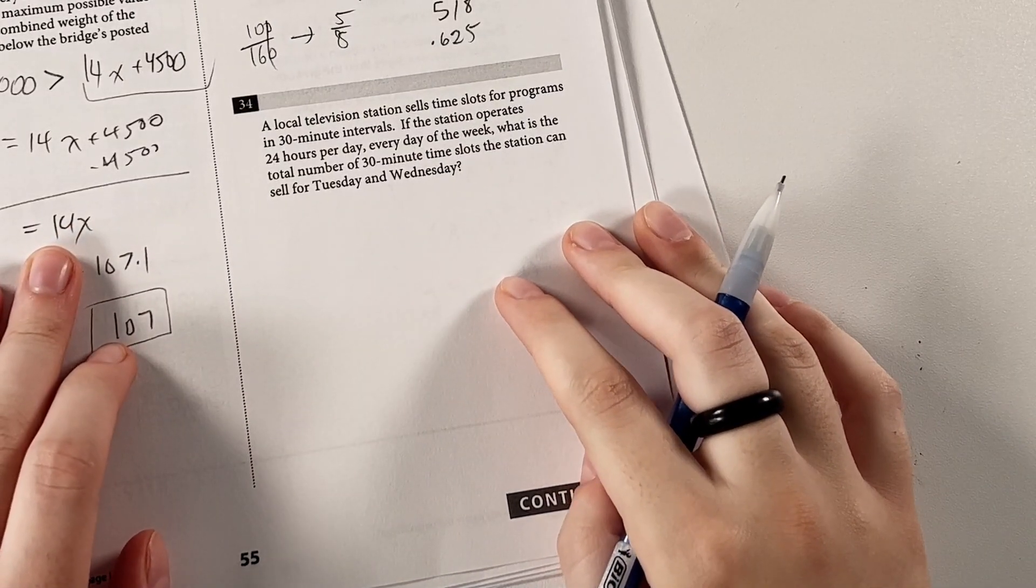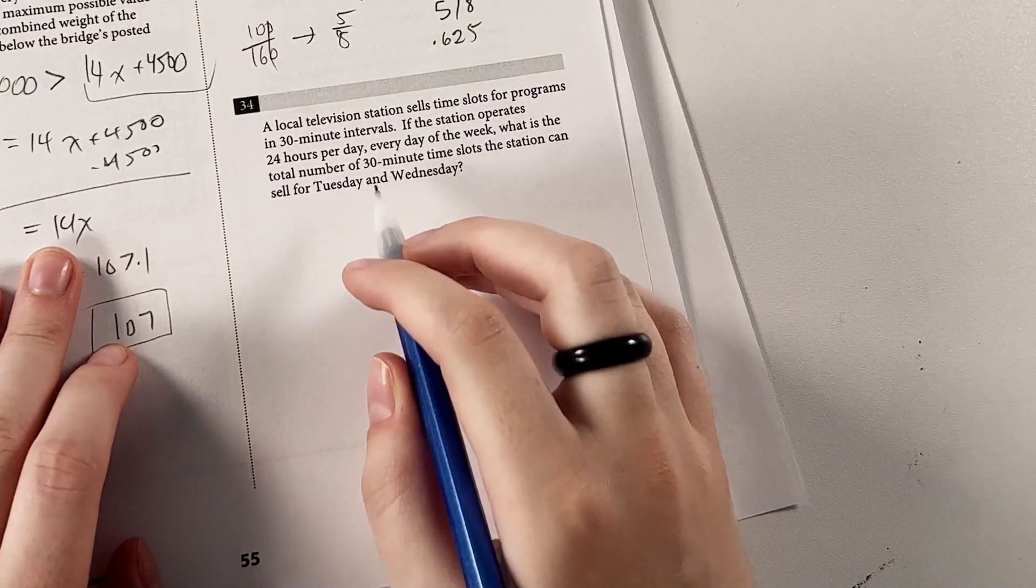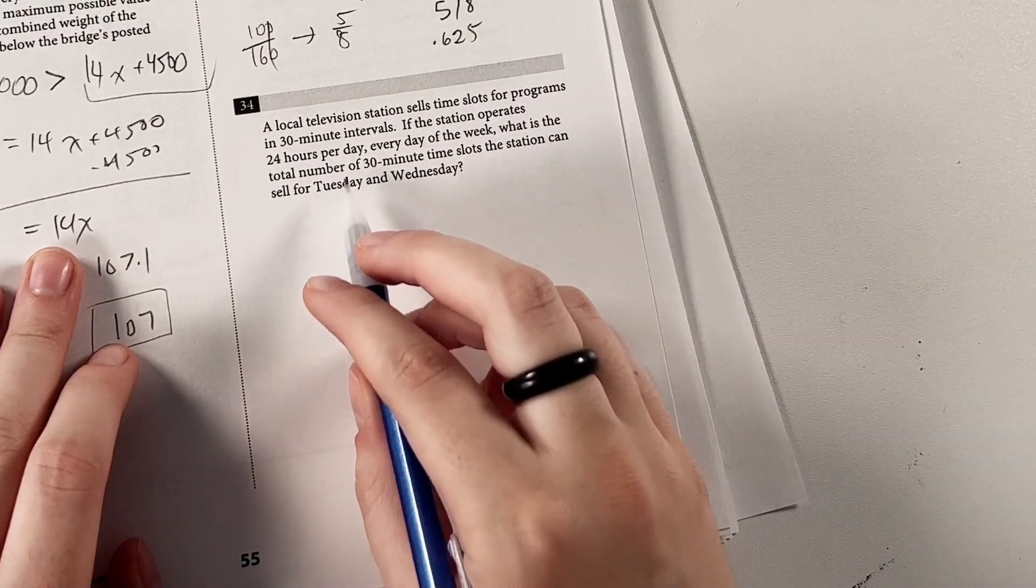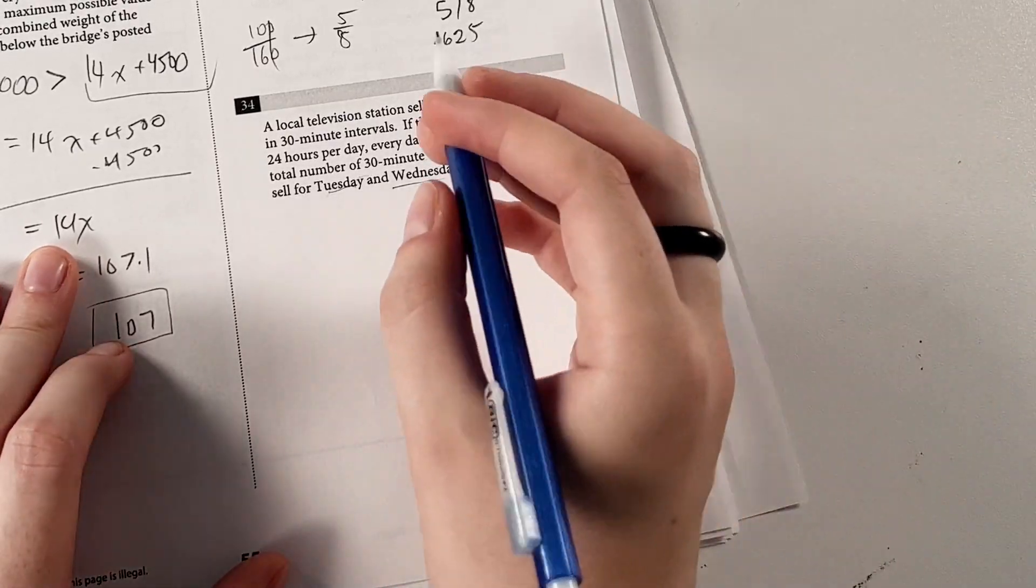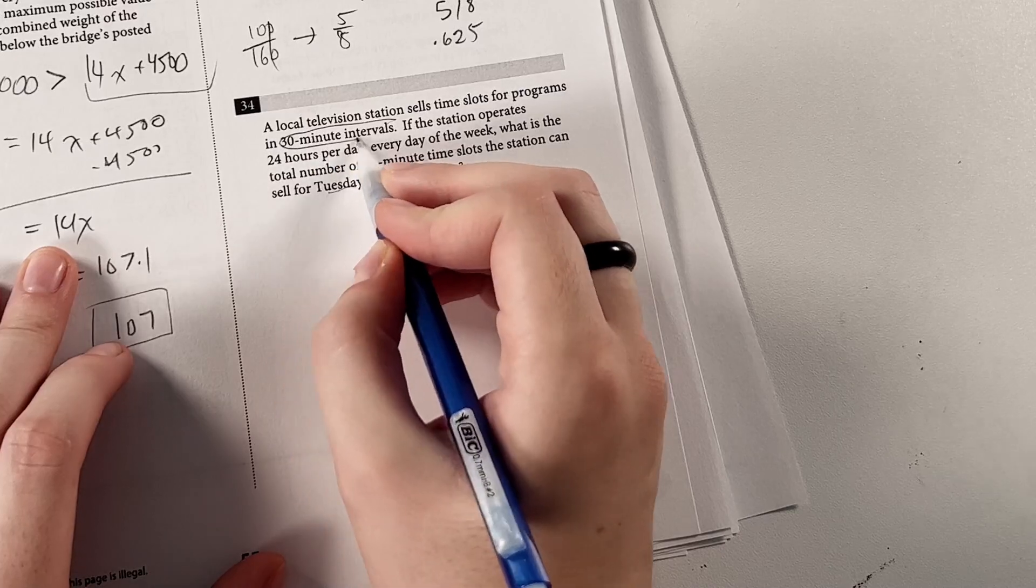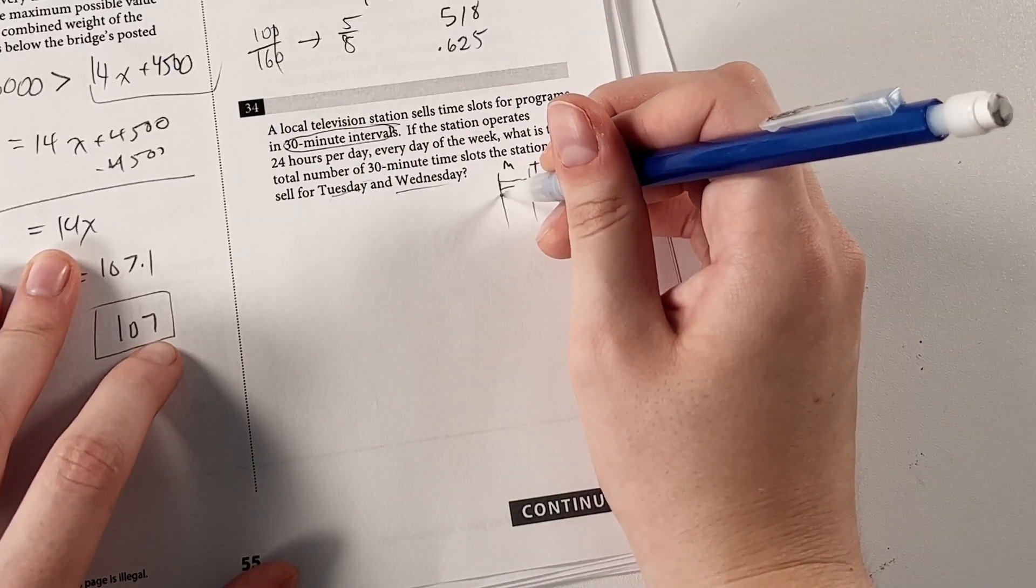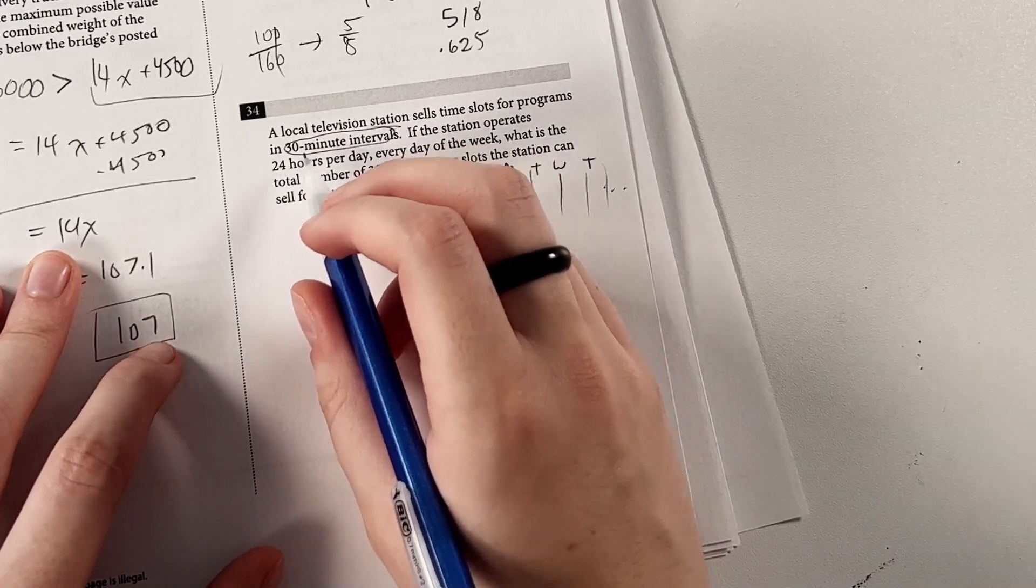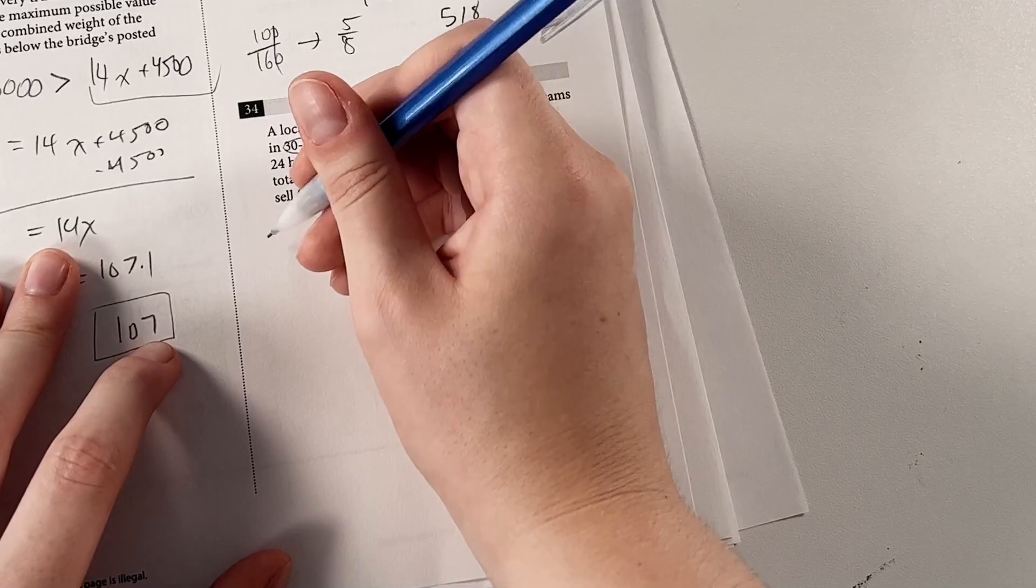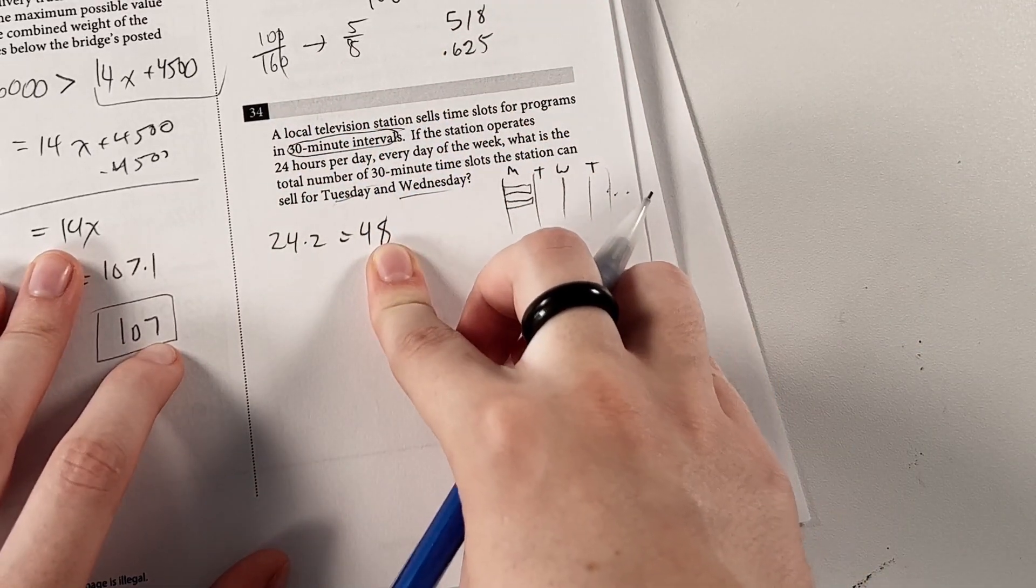Alright, so a local television station sells time slots for programs in 30-minute intervals. If the station operates 24 hours per day every day of the week, what is the total number of 30-minute time slots the station can sell for Tuesday and Wednesday? So let's treat these little intervals as chunks. So we have our whole week, and we have these chunks that they can sell for time slots. There's 24 hours per day. There's going to be two 30-minute intervals per hour, so that means there's going to be 48 of these little 30-minute intervals per day.